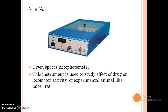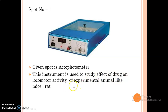In the spotting, firstly we have to write the spot number in the answer sheet and then we have to write the name of the spot. In the description, firstly we have to write the name of the spot — for example, the given spot is actophotometer — and after that we have to write the use. This instrument is used to study the effect of the drug on locomotor activity of experimental animals like mice and rat.